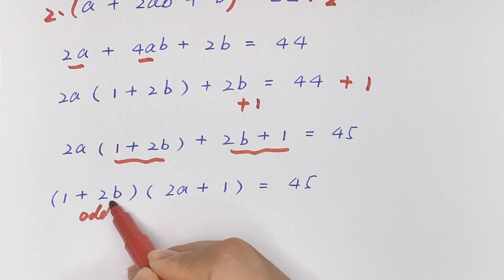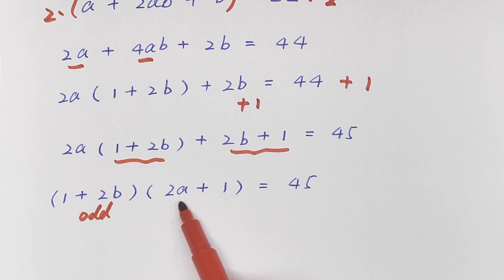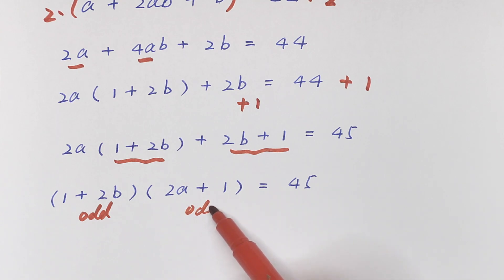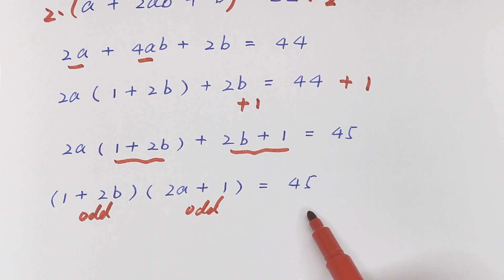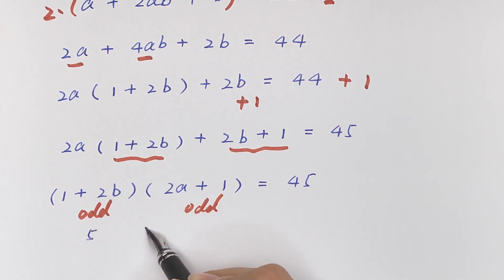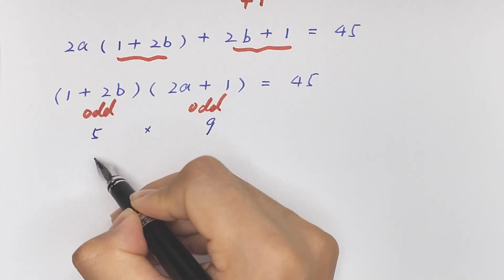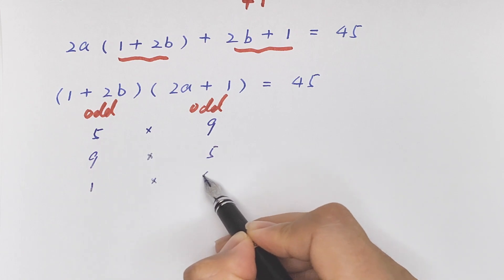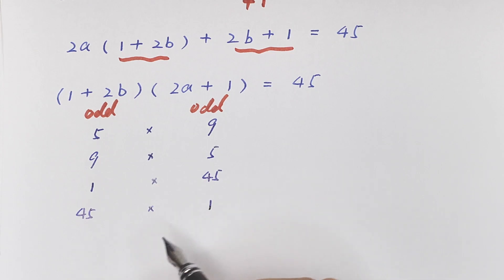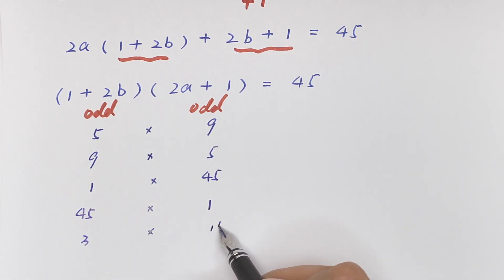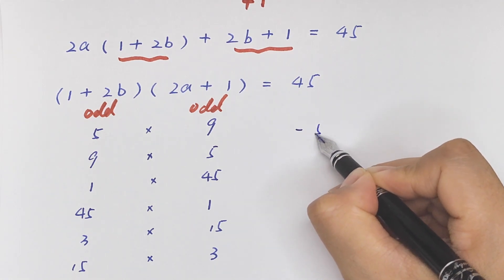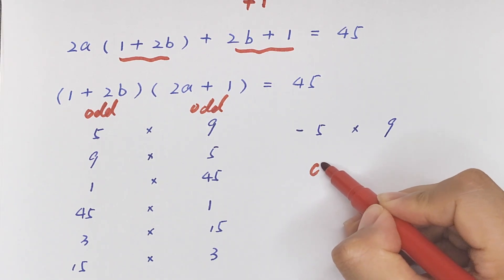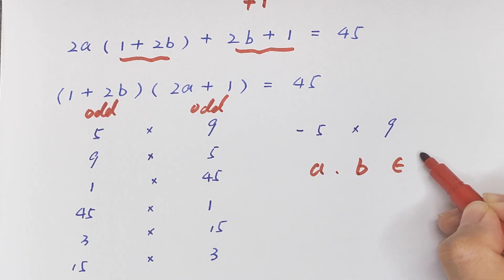Since 2 times any number is even, and even + 1 is odd, both (1 + 2b) and (2a + 1) must be odd. So 45 must be expressed as a product of two odd numbers: 9×5, 5×9, 3×15, 15×3, 1×45, or 45×1.